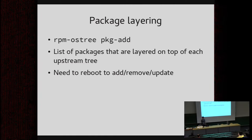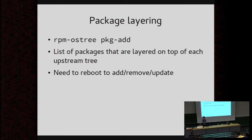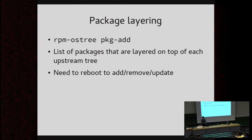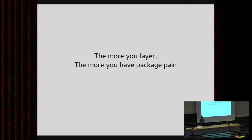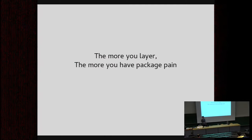There's a command recently added — `rpm-ostree pkg-add` — which says add the package to a list of layered RPMs. rpm-ostree then composes a new tree locally that includes everything in the upstream tree plus those packages you've added. To create a new OS tree and reboot into it, you actually have to reboot, which is not all that convenient. The more individual packages you layer on, the more you have the old package pain — conflicts, untested combinations. Package layering is really for adding a few small modifications you need; it's not a replacement for installing arbitrary packages.